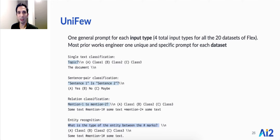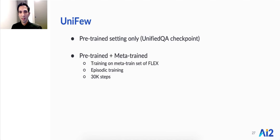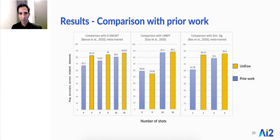Whereas most prior work engineers one unique and specific prompt for each dataset, we have one prompt per input type. We evaluate Unifew in two settings: first, a pre-training only setting where we take the UnifiedQA checkpoint, and second, applying meta-training on top of the UnifiedQA checkpoint — training on the meta-train set of FLEX using episodic training for 30,000 steps. For each prior work comparison, we use either the Unifew or Unifew meta-trained version depending on whether that prior work used meta-training.